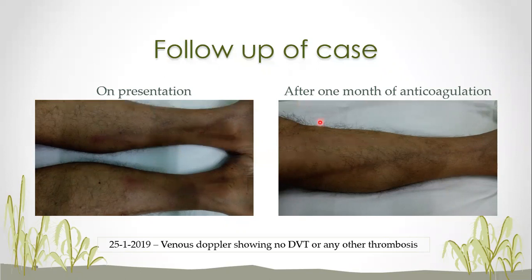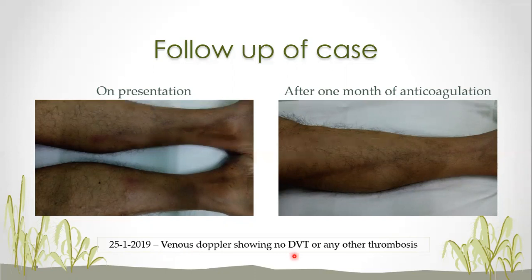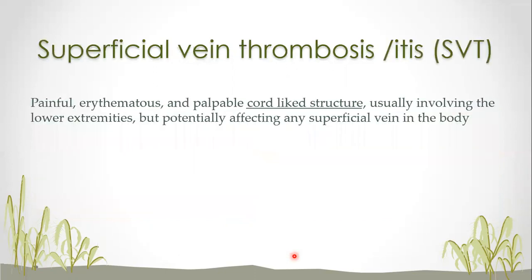At follow-up after one month, the erythema is gone on the left leg; what remains is hyperpigmentation and remaining discoloration along the long saphenous vein. Today he came for a follow-up venous Doppler to check for any deep vein thrombosis and resolution of remaining superficial vein thrombosis. There was no DVT in either leg and we stopped his anticoagulant.